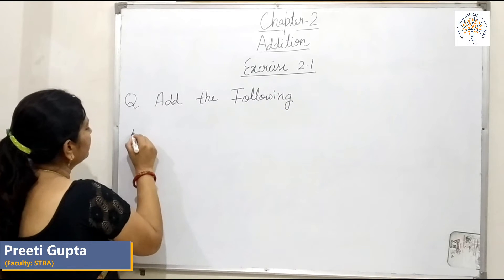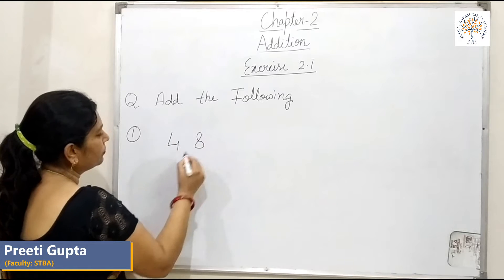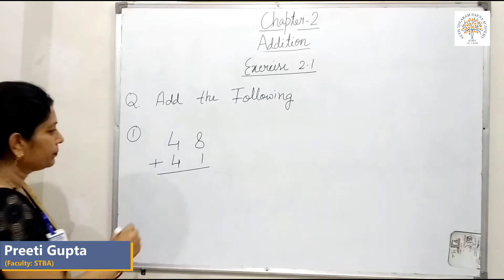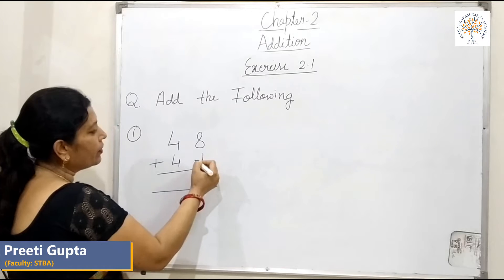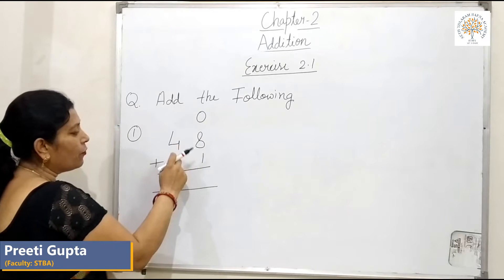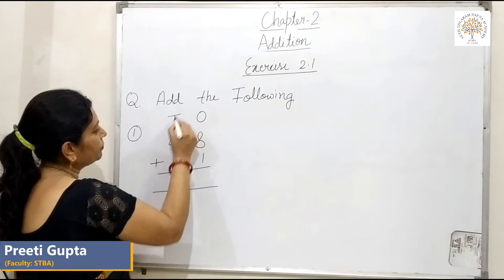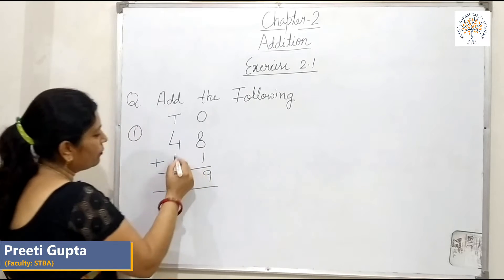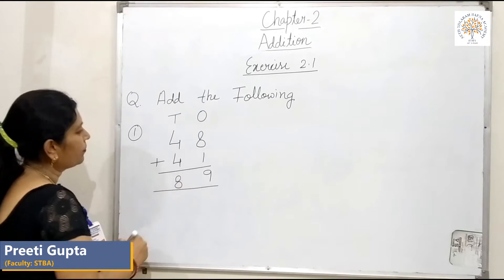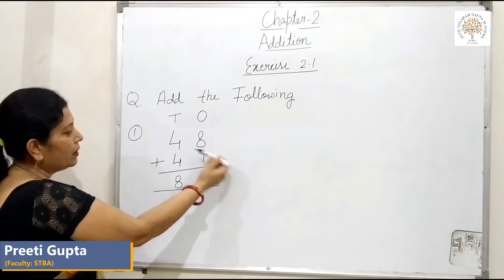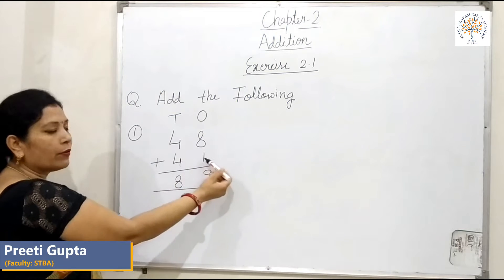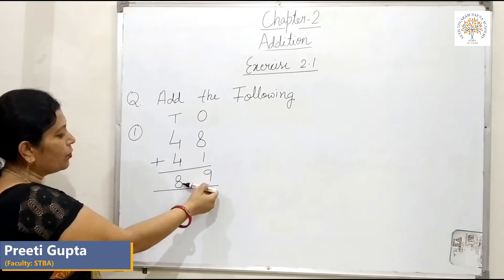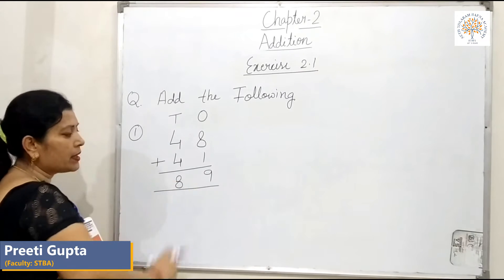Question number 1: 48 plus 41. 8 and 1 are in the 1's place, and 4 and 4 are in the 10's place. 8 plus 1 is equal to 9. 4 plus 4 is equal to 8. So the answer is 89.